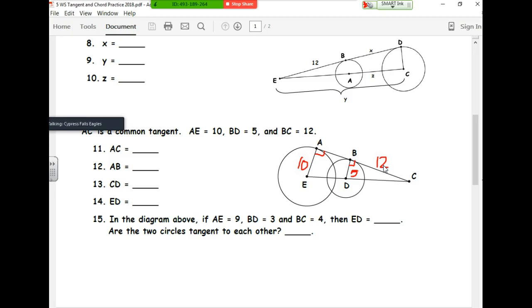To find the missing sides, we'll use Pythagorean theorem. 5 squared plus 12 squared equals 13 squared. We'll also use proportions.